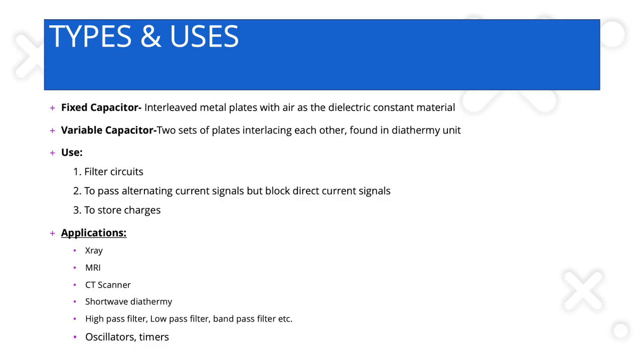Most electrotherapy devices work on the basics of electricity and physics. Capacitors are used in various devices like MRI machines, CT scan machines, X-ray machines, and in electrotherapy devices like shortwave diathermy machines, EMG analysis machines, and different filters such as low-pass, high-pass, and band filters, as well as in various oscillators and timers. Capacitors allow the passage of alternating current while blocking direct current.